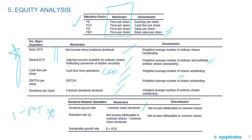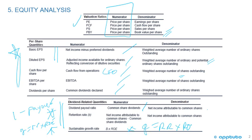The retention rate is one minus the payout ratio. The sustainable growth rate G equals the retention rate times ROE. ROE can be decomposed using the DuPont framework. We cover those formulas in detail in the equity section.